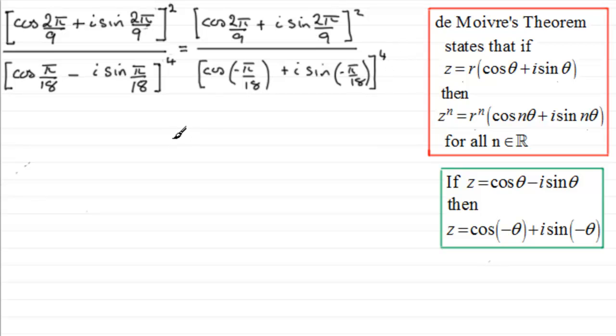Now next I can use De Moivre's Theorem up here where all I need to do is just take our power and multiply it by the argument. So for the top line here we're going to have the cosine of 2 times 2π over 9, which is 4π over 9, and the same for the sine, i sine of 4π over 9.